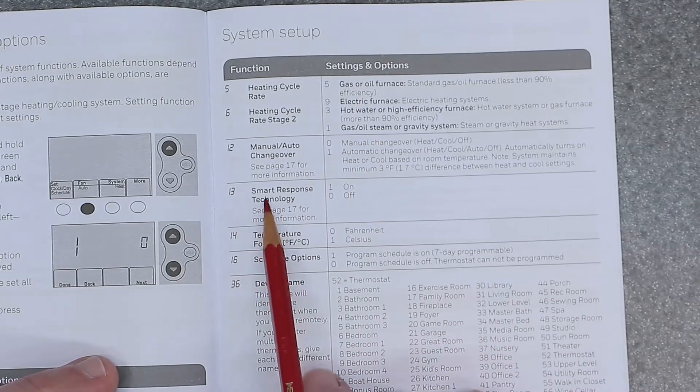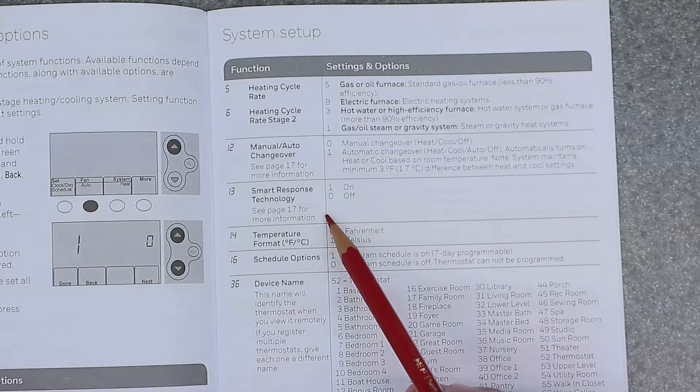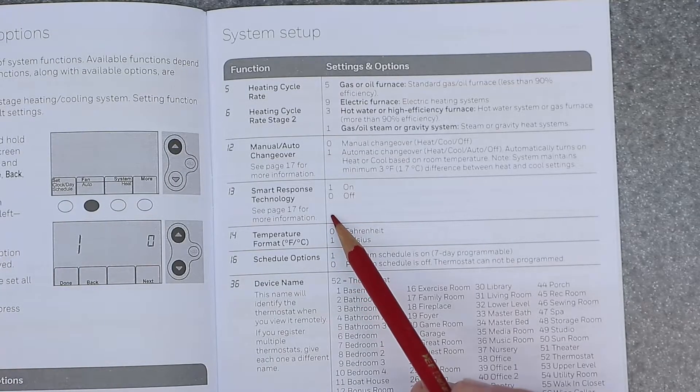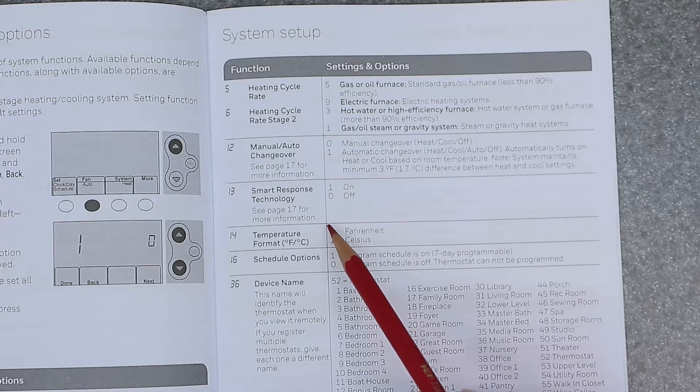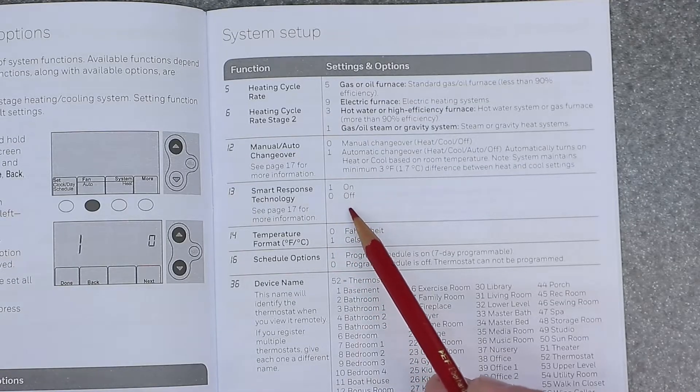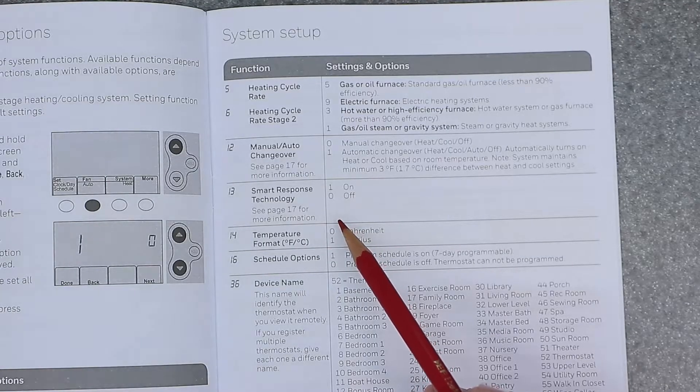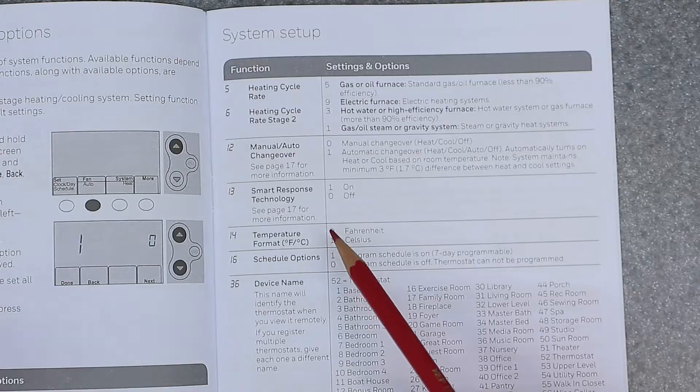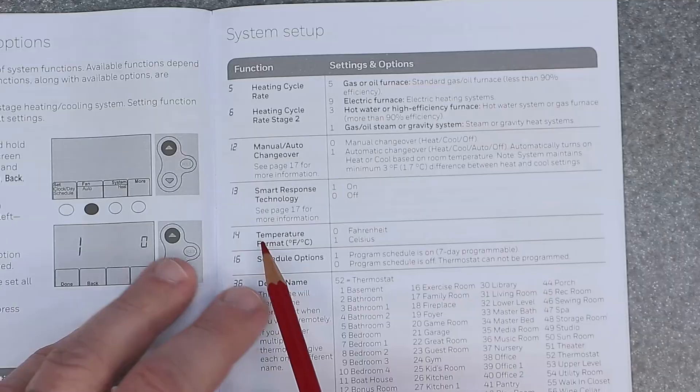Thirteen is smart response technology. One is going to equal on and zero is going to be equal off. So this here will actually learn how long it takes for your room to come up to temperature. So this usually will start the heat early or start the cooling early as well. Some people don't like this because it makes the system run longer and start earlier. So most of the time people will deactivate this and turn it off. But it will start the system an hour or two ahead of time that's scheduled in order to compensate for that time for it to be that exact temperature if you get what I'm saying. So if that's something you want, decide that and go ahead and change that over to on or off.